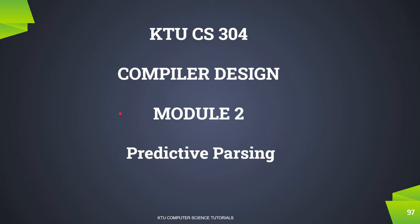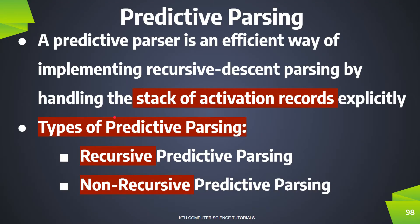If recursive descent parsing has a problem, we will backtrack the situation. In the recursive descent parsing method, we use recursive procedures by handling the stack of activation records.